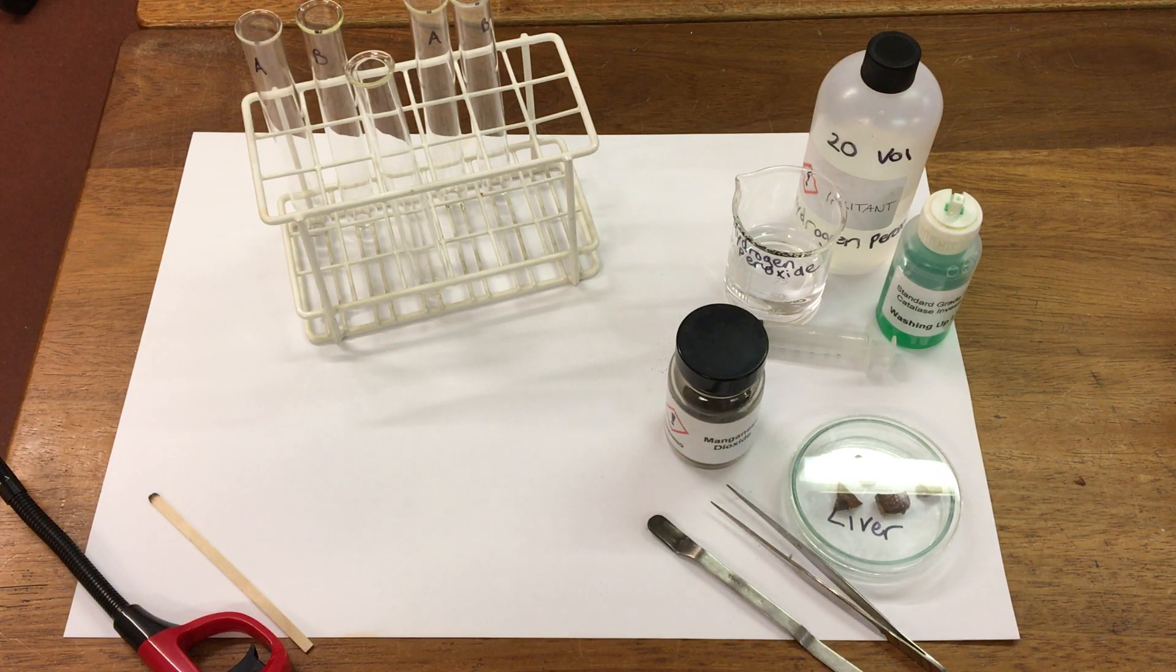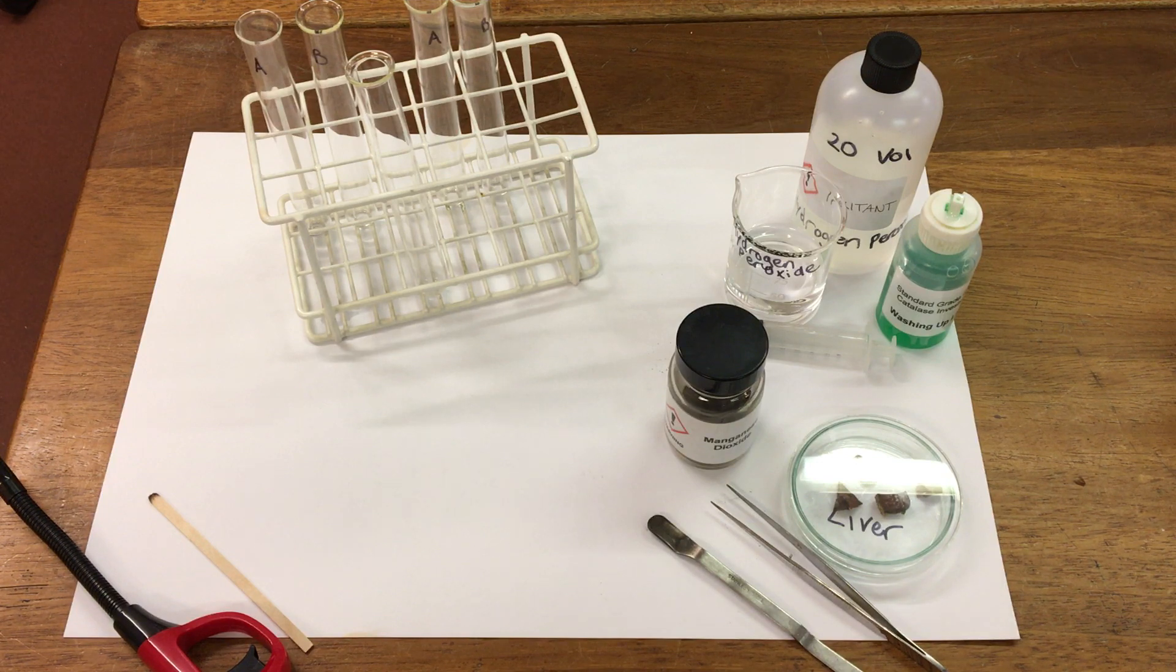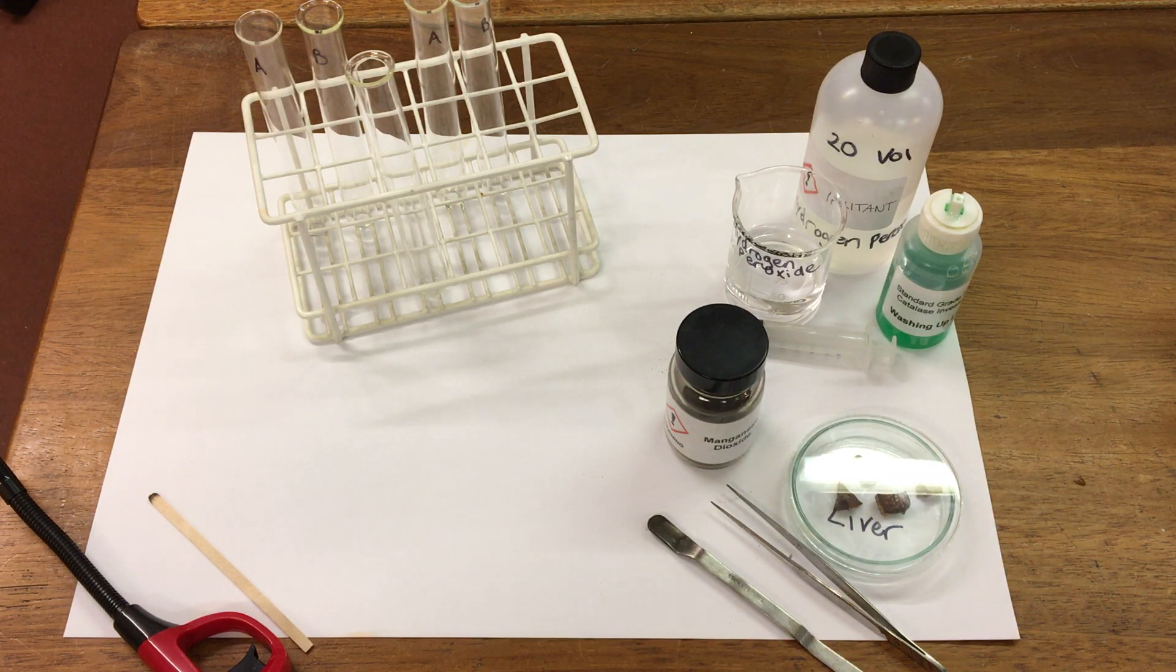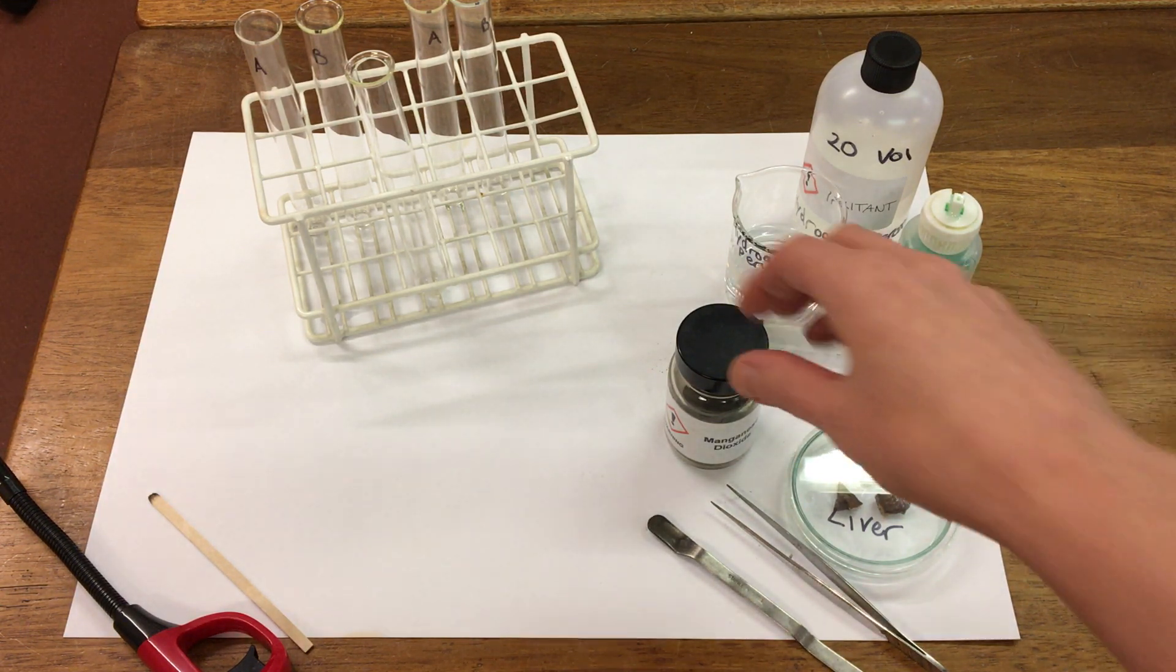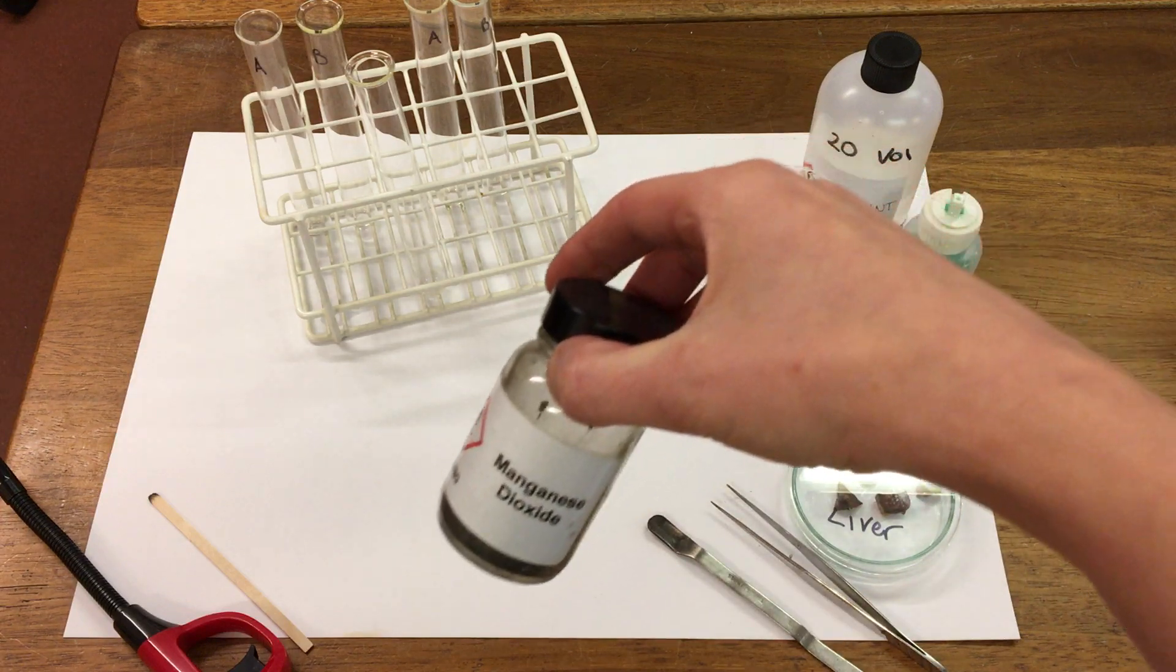In this experiment we're going to investigate the effects of a catalyst on hydrogen peroxide. When we add a catalyst to hydrogen peroxide a gas is produced. I'm going to show this by using a catalyst manganese dioxide.